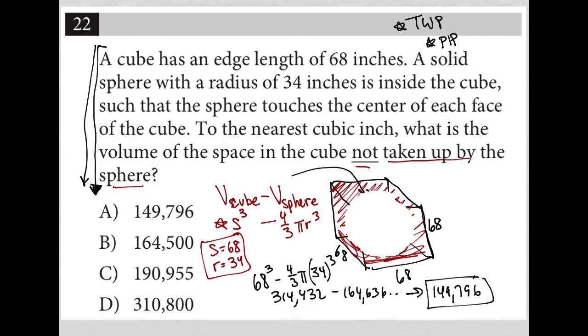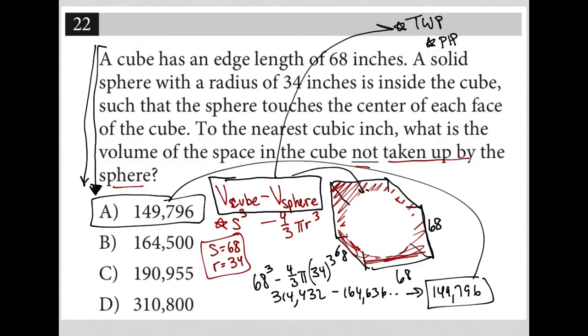And therefore the correct answer here is choice A. So I took a bit more time with this video. This would not take as much time for you to solve on your own. Obviously, the key here is understanding that this is what you are doing. This is the translation of the question. V cube minus V sphere is what you're finding. The rest is just plug in and chug through all the algebra.